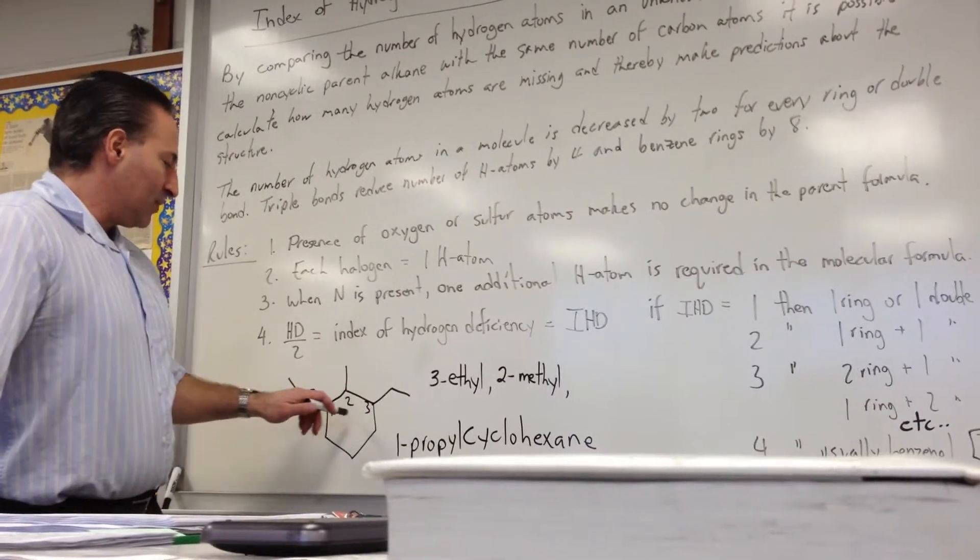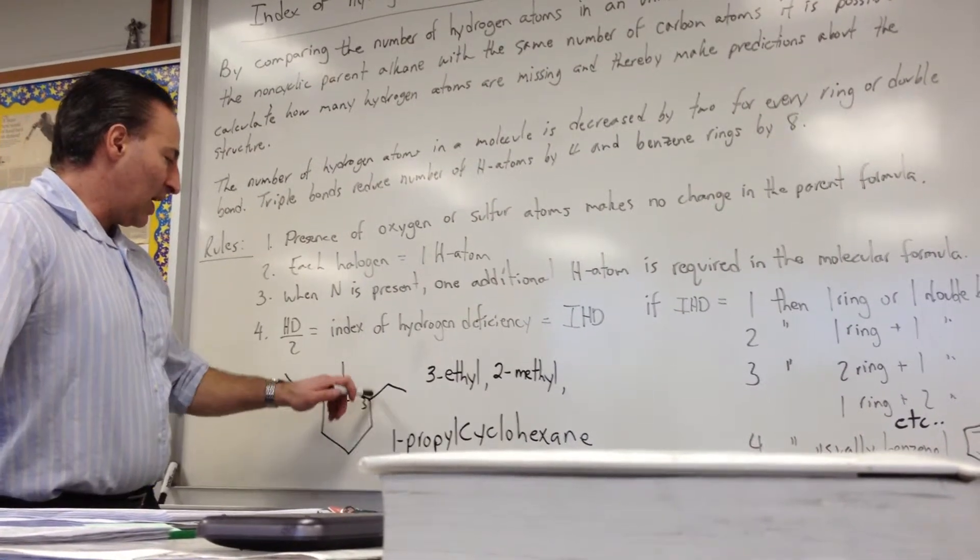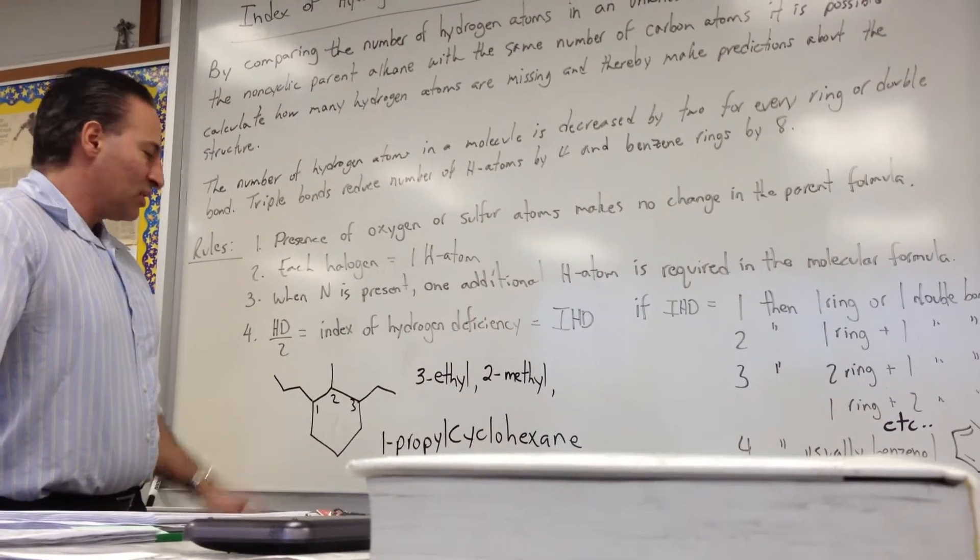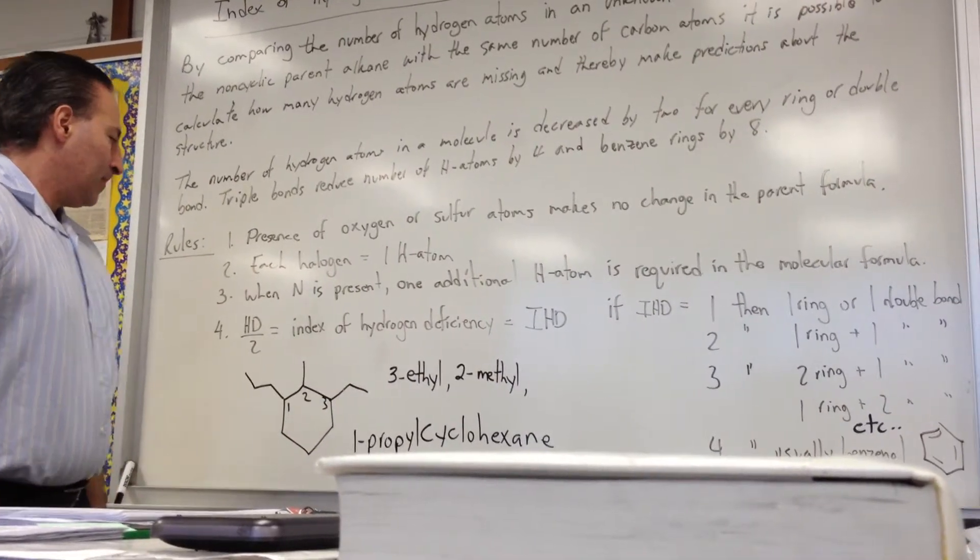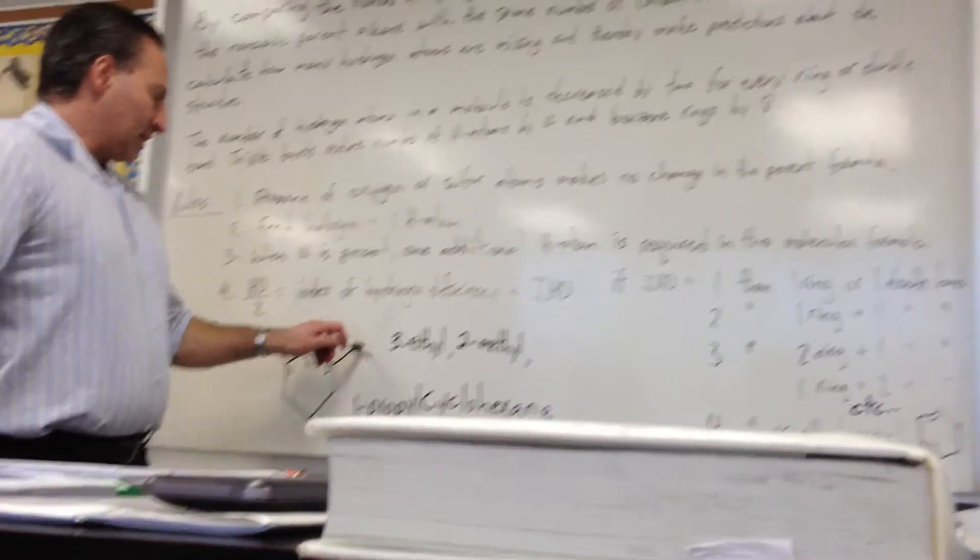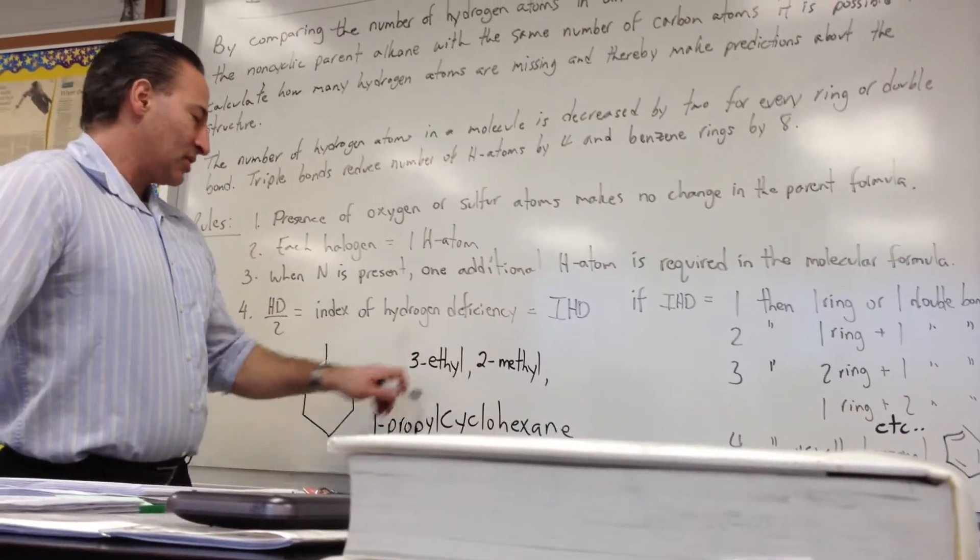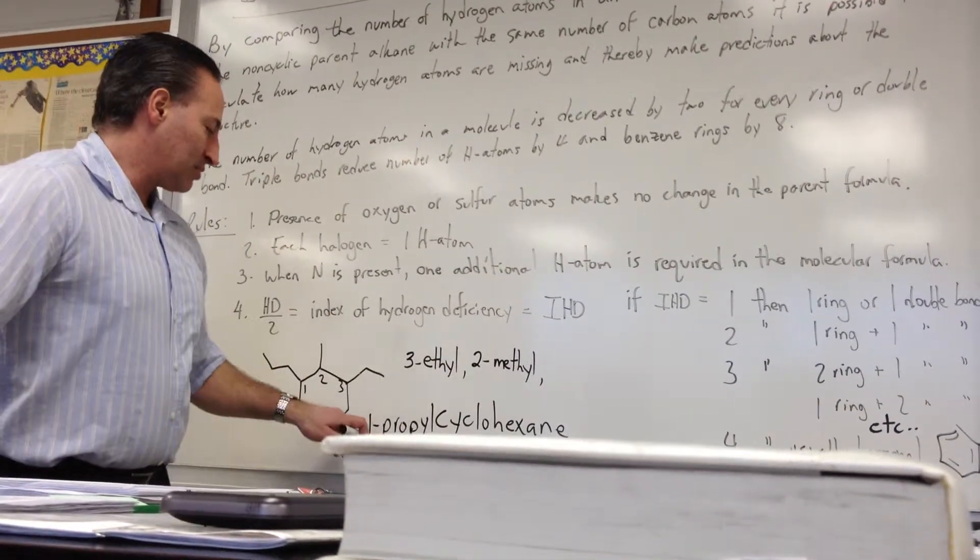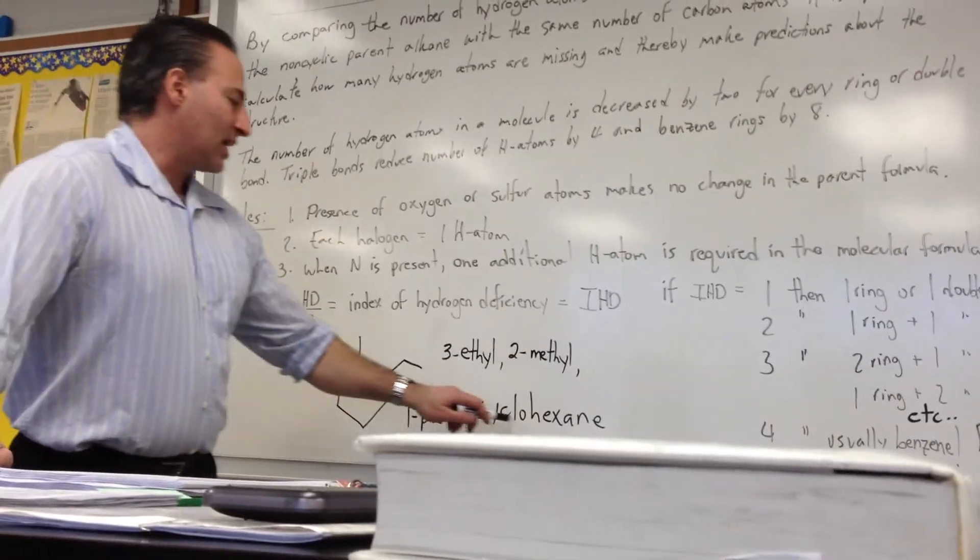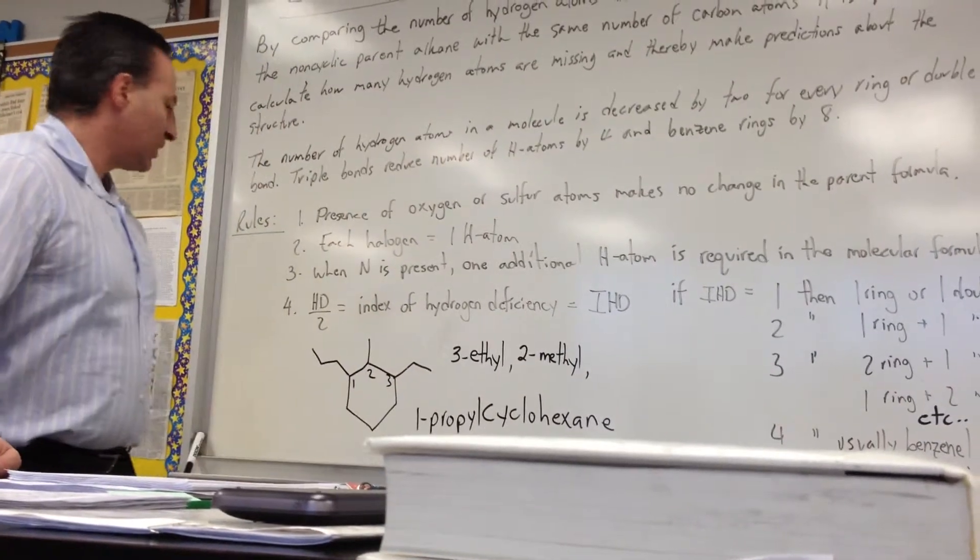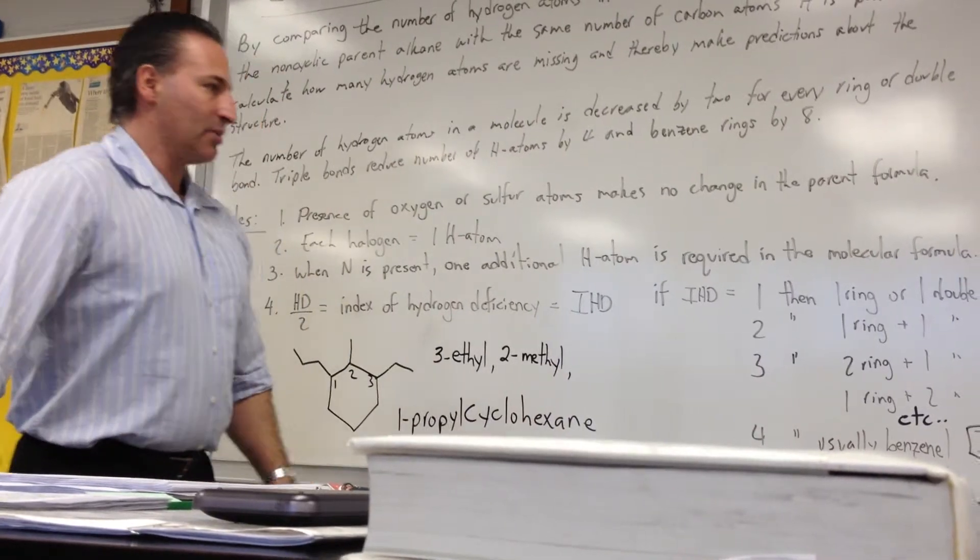If I was to number it this way, it would be 1,2,3,4,5, and the ethyl group would get a 5, so we know that we have to go the other way, so it gives lower numbers. So we would call this 3-ethyl, alphabetizing the E first, 2-methyl, because M comes before P, 1-propyl, this is the propyl group, cyclo because it's cyclic, hexane because it has six carbon atoms.